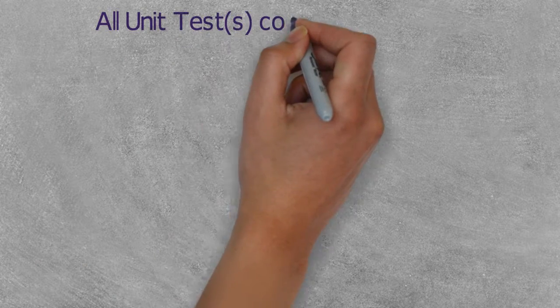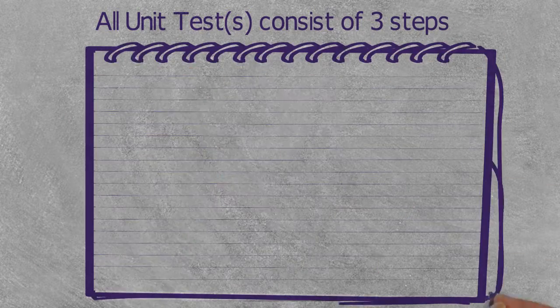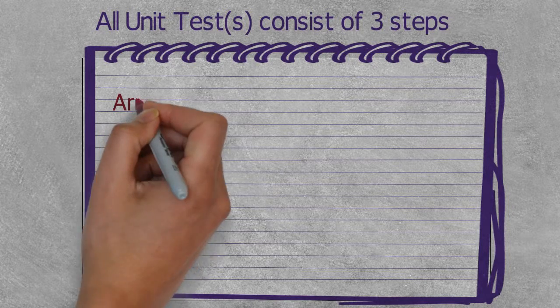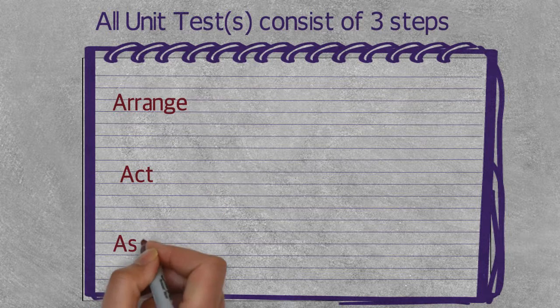All unit tests consist of three steps. These steps are: step one is arrange, step two is act, and step three is assert.